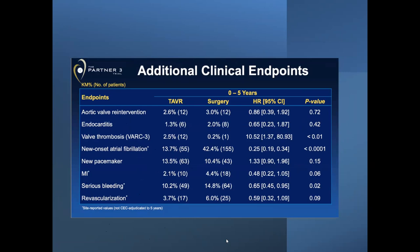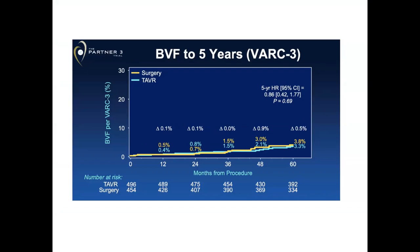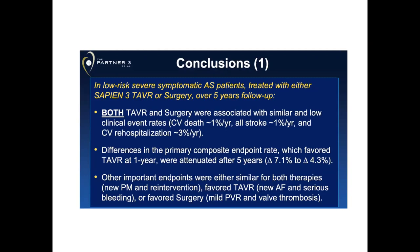Bioprosthetic valve failure at five years shows no significant difference between both groups. In conclusion, both TAVR and surgery were associated with similar and low clinical event rates. Differences in the primary composite endpoint favored TAVR at one year but were attenuated after five years. Other important endpoints were either similar for both therapies — such as new pacemaker and re-intervention — in favor of TAVR for new AF and serious bleeding, and in favor of surgery for mild paravalvular leak and valve thrombosis, which I find quite significant.